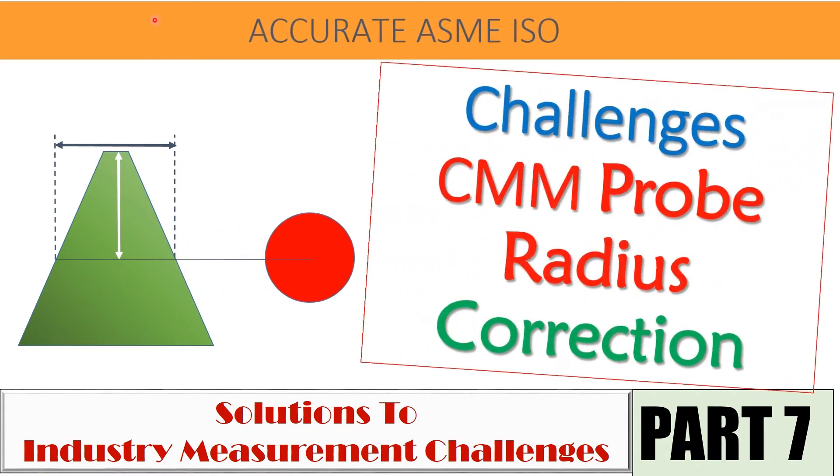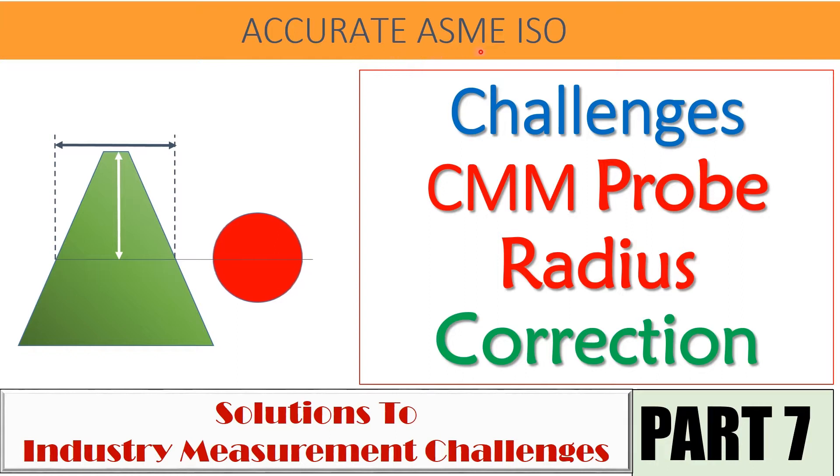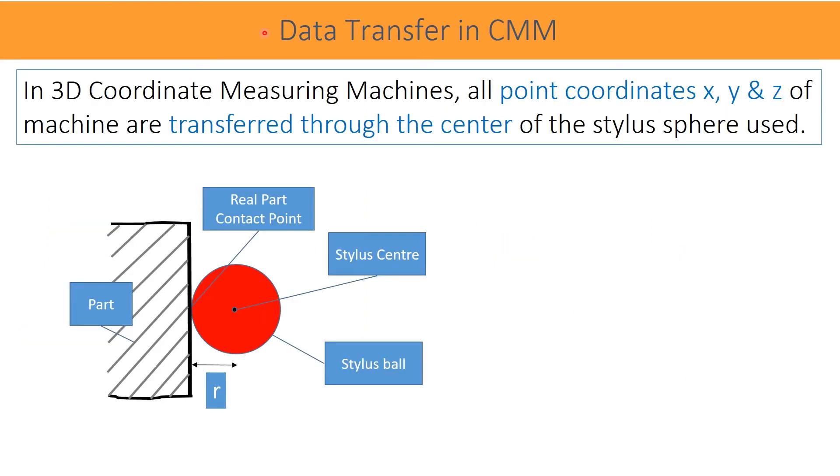Hello friends, welcome to our YouTube learning channel, Accurate ASME ISO. In this video, common mistakes unknowingly made by CMM users are discussed. One of those is probe radius correction or compensation in the measurement done. Please do not forget to subscribe and share this video to every CMM user. Let us begin now.